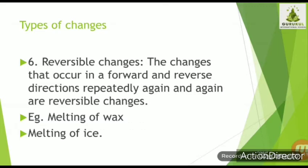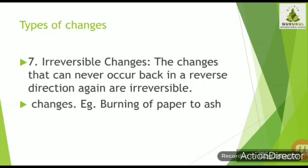Opposite to reversible are irreversible changes — changes that can never go back in the reverse direction. For example, burning of paper to ash: once you burn paper it becomes a black substance called ash, and from ash you cannot get back the paper. Another example is ripening of mango — from raw mango to ripened mango is an irreversible change, as you cannot get the raw mango back. Such changes are known as irreversible changes.